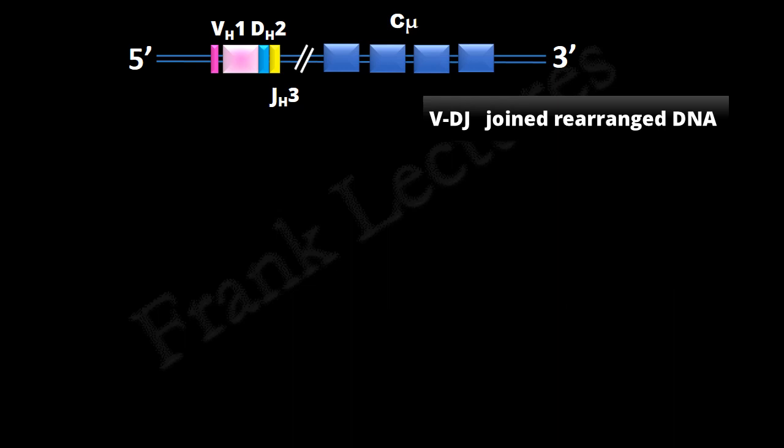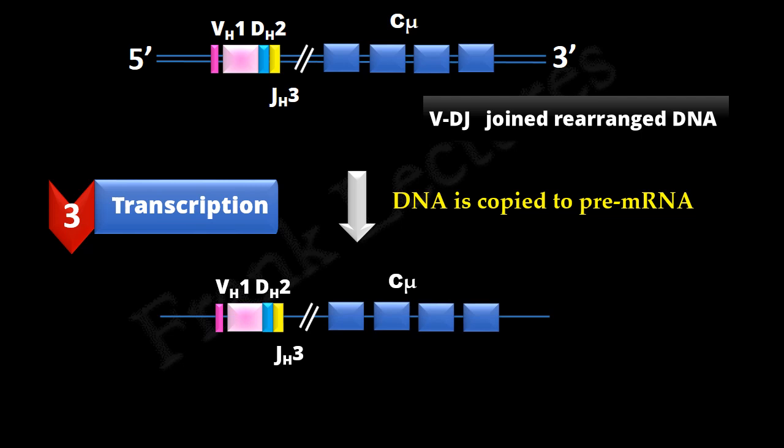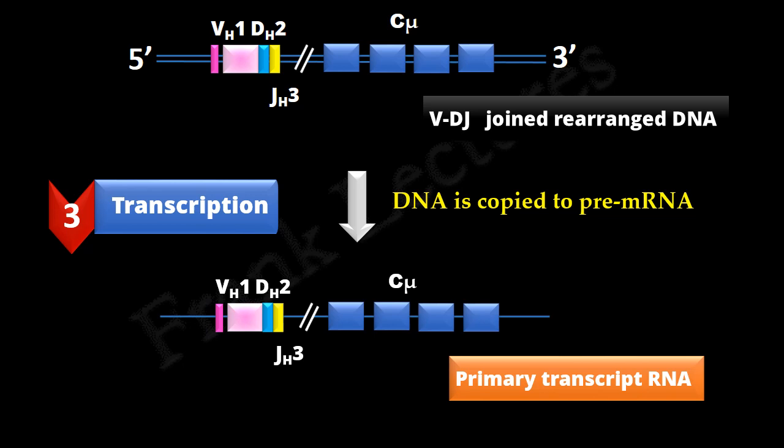In the third step, transcription occurs and primary transcript RNA or pre-mRNA is produced. RNA is single-stranded, so it is represented by single line. So, we have a pre-mRNA having a V region exon, C region exon, and intervening non-coding sequences or introns.